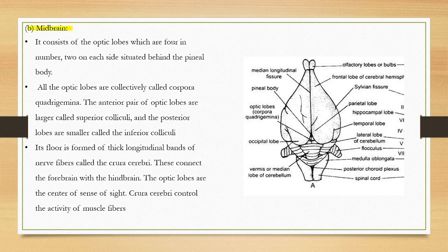The next part is the midbrain. It consists of optic lobes which are four in number. The midbrain has four rounded structures called the corpora quadrigemina, which connect the forebrain and hindbrain. The optic lobes are the center of the sense of sight.